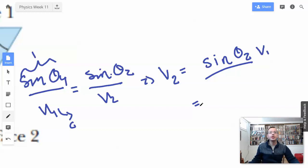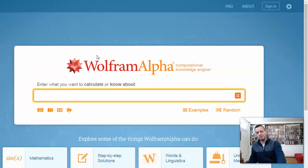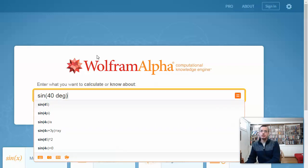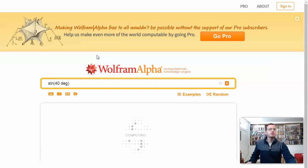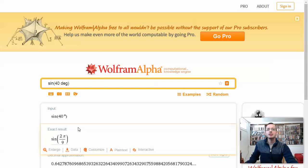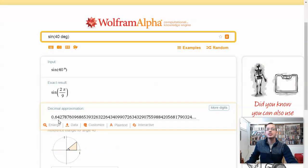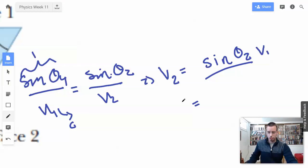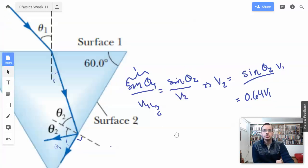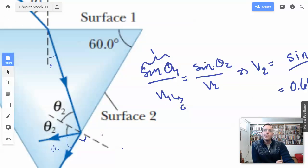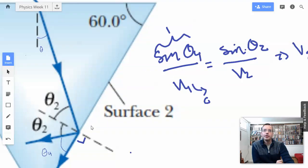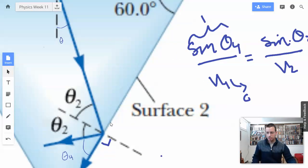So we know that theta 2 is 40. Sine of 40 is, what is it, 2 thirds? Sine of 40 degrees, I'll say 0.64. So V2 equals 0.64 V1. Okay, that works. So let's try and do some other things and see where this goes.